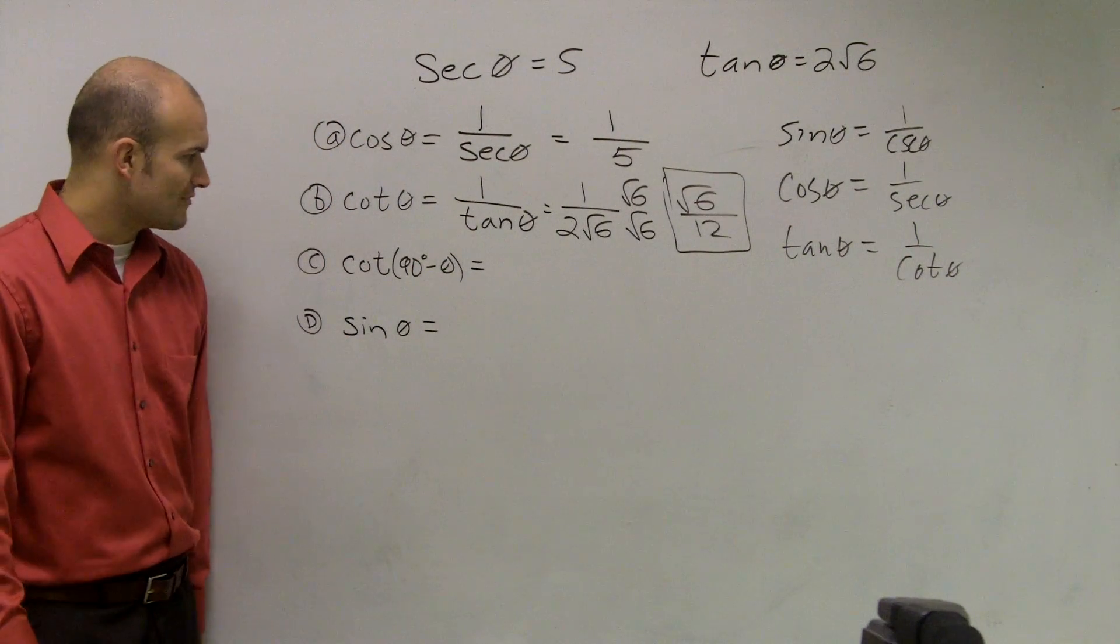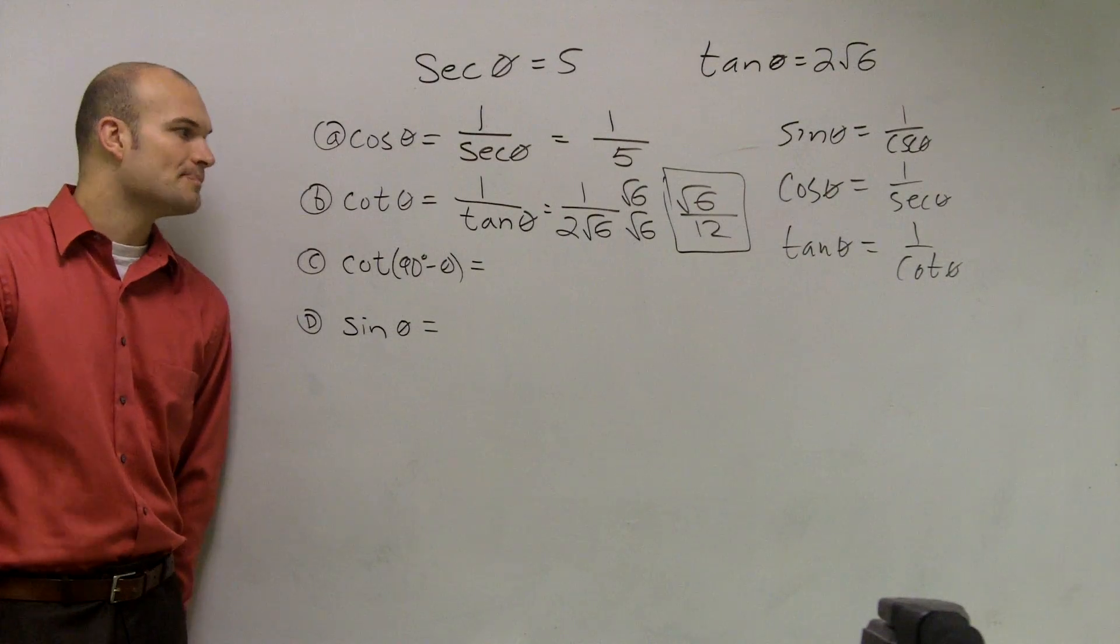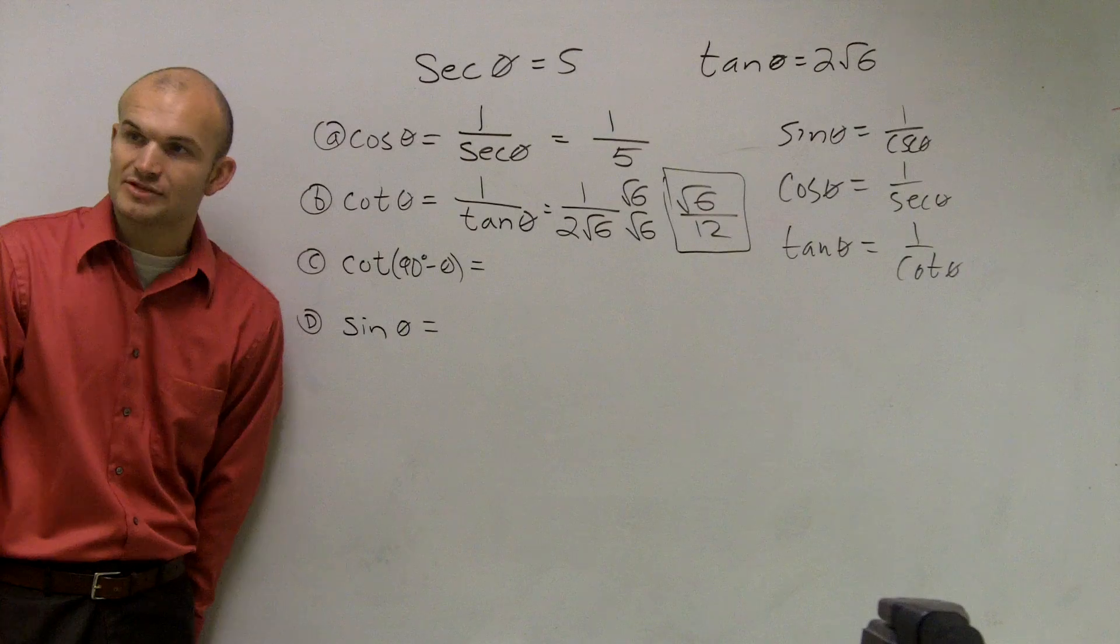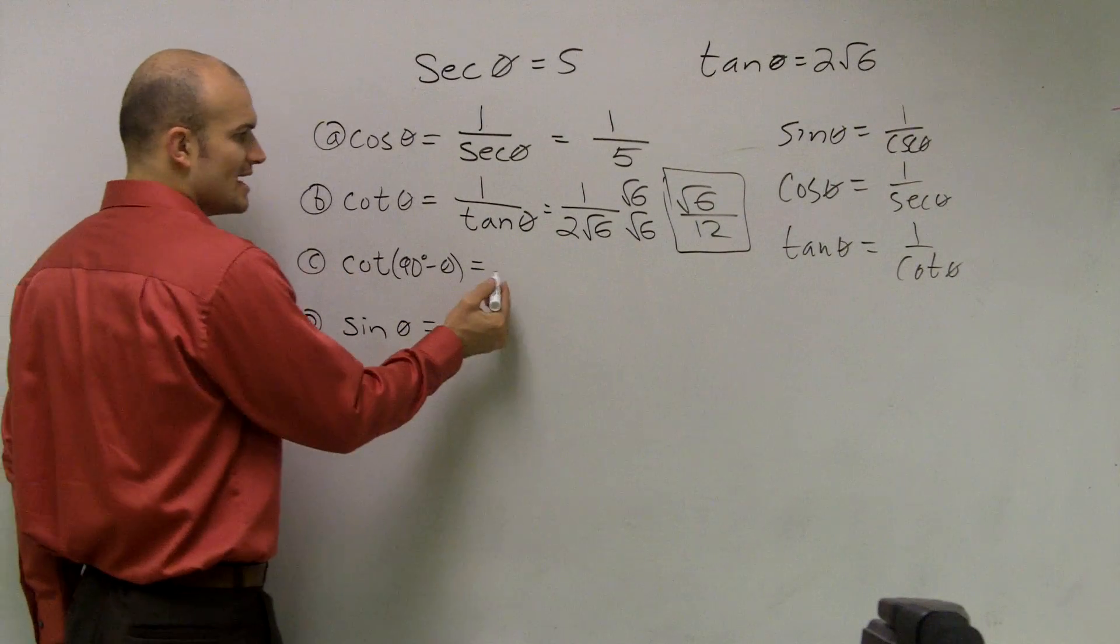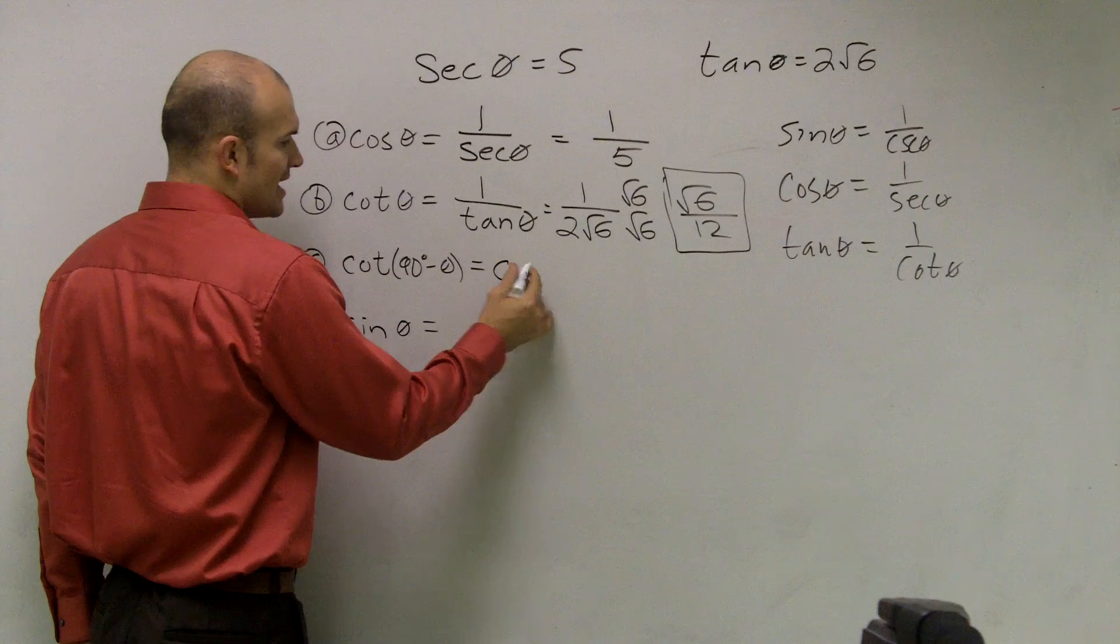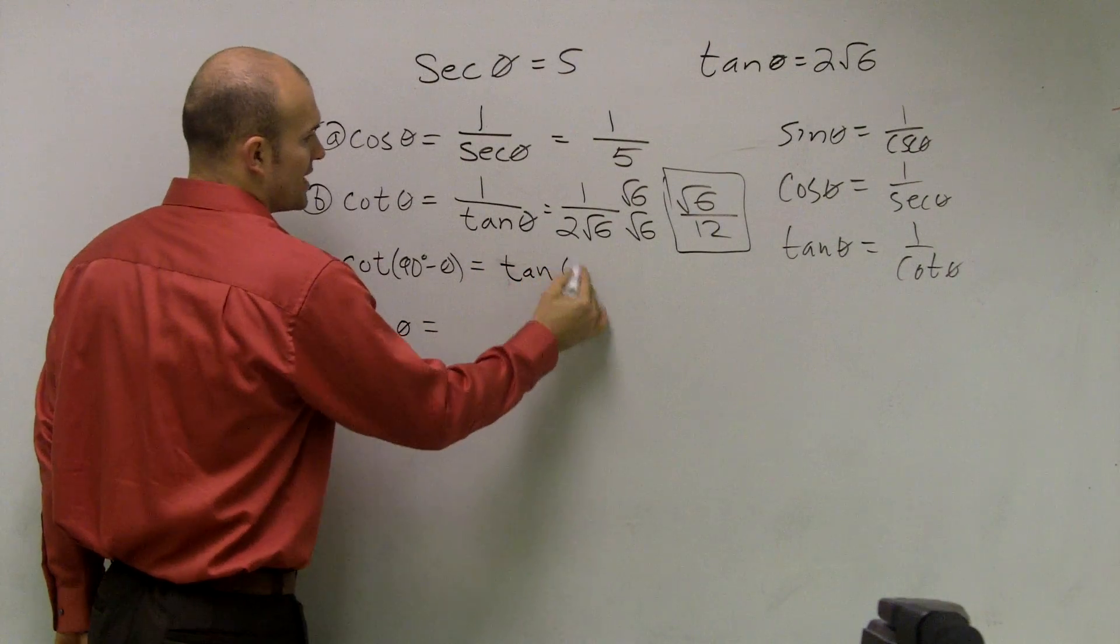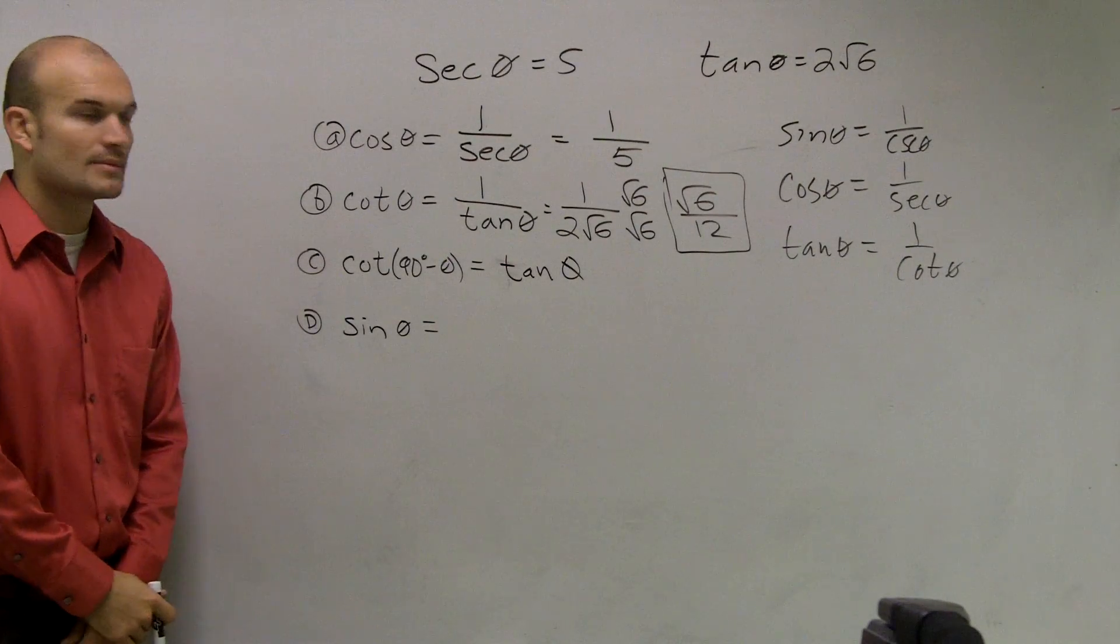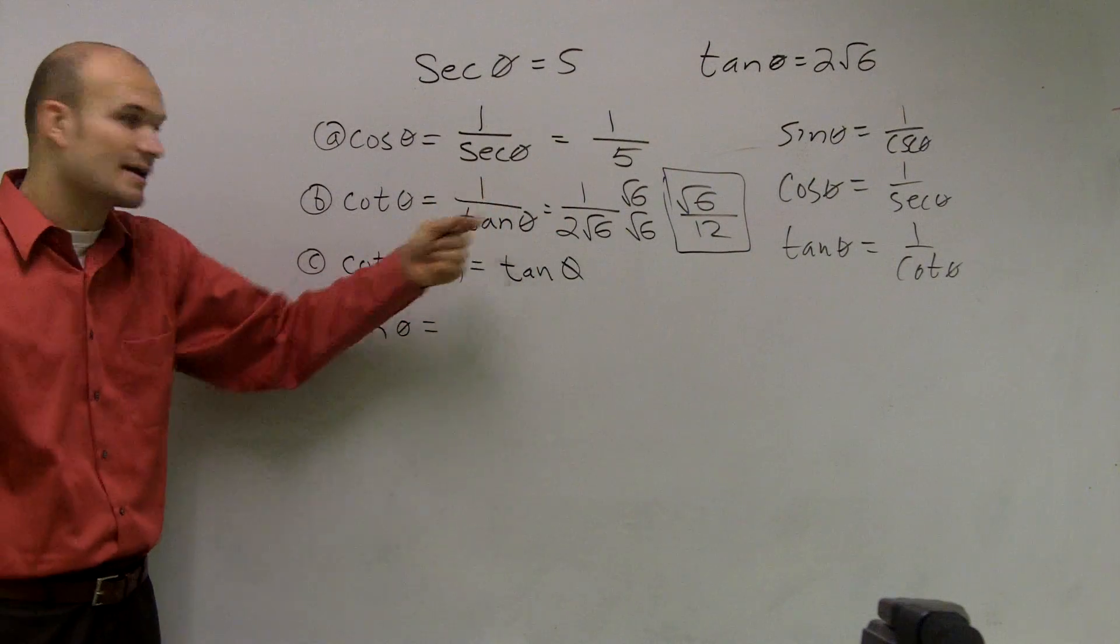Okay, now cotangent. So I have cotangent of 90 degrees minus theta. If you guys, when we had our cofunction complementary identities written down, one thing you need to understand is cotangent of 90 minus theta is the same thing as tangent of theta.